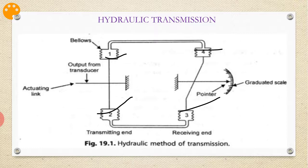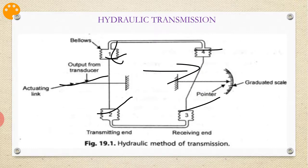When the activating link at the transmitting end is operated by the measuring element, one bellow expands and the other is compressed. This expansion and contraction is communicated to the receiving end, which moves the receiving pointer by an equal amount. The purpose of using two bellows on either side is to compensate for changes in ambient temperature.